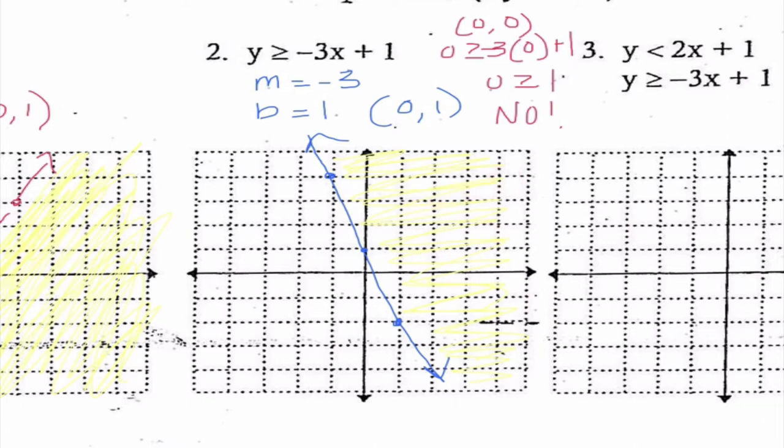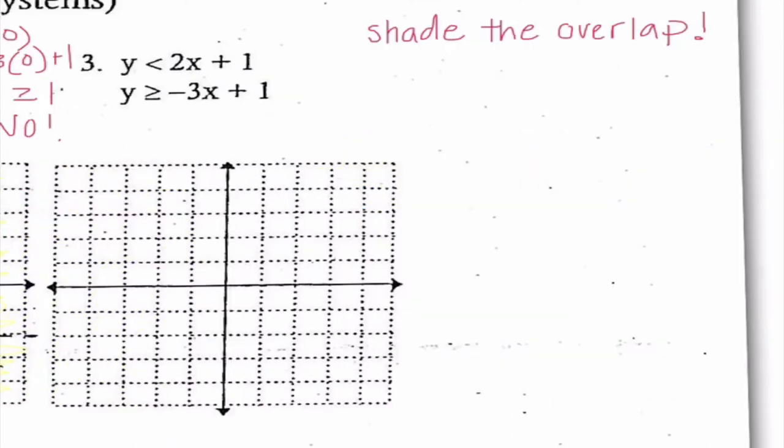That's a quick review of what we did last chapter. If you need more help, please go back to that lecture and re-watch it. Right now we're going to move on to the new material — finding the solution to systems of linear inequalities. As a reminder, we want to shade the overlap: we look at where these two systems' shadings overlap and shade that section really dark.